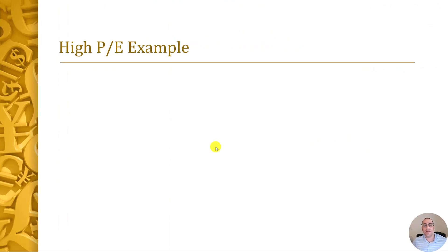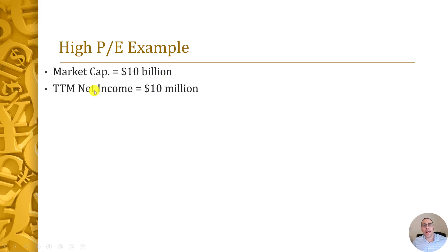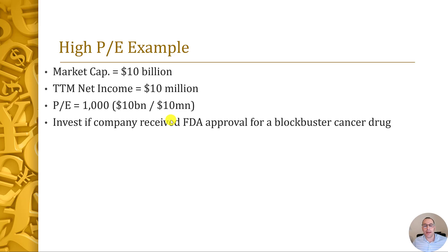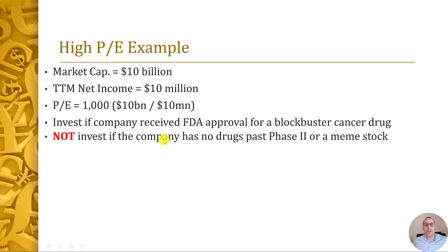That does not mean if a stock has a PE below 16 it's a better value than the S&P. So let's talk about a high PE company and look at the pros and cons. Say there's a company with a $10 billion market cap and trailing 12-month net income of $10 million — that means the PE is 1,000: $10 billion over $10 million. An investor is willing to pay $1,000 for $1 of earnings. Why would anybody pay so much for a stock? What if the company just received FDA approval for a blockbuster cancer drug? That could be a reason so many people are gobbling up the stock and driving the price higher, even though their net income is so low.